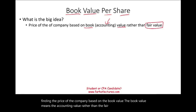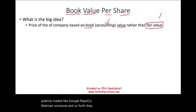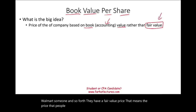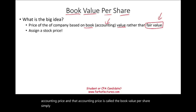Each company, if it's publicly traded like Google, PepsiCo, Walmart, and so on and so forth, they have a fair value price — a price that people buy and sell on the market. There is another accounting price, and that accounting price is called the book value per share. Simply put, it's assigning a stock price, but that stock price is based on the balance sheet.